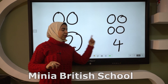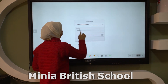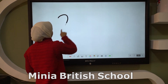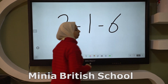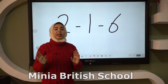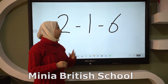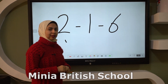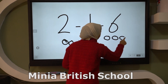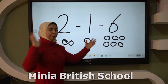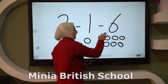Okay KG, when I have two, one, and six — which one is the biggest number? Two, one, or six? Guess what — six! Excellent! Six is the biggest number.